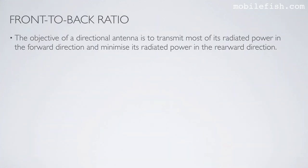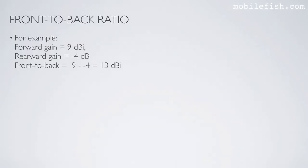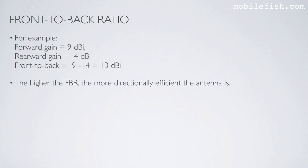The objective of a directional antenna is to transmit most of its radiated power in the forward direction and minimize power in the rearward direction. The front-to-back ratio is expressed in dB (dBi or dBd) and equals the forward gain minus the rearward gain. For example, if the forward gain is 9 dBi and the rearward gain is minus 4 dBi, the front-to-back ratio is 13 dBi. The higher the front-to-back ratio, the more directionally efficient the antenna is.